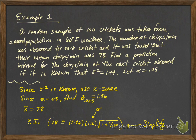In this problem, a random sample of 100 crickets was taken from a normal population in 60 degree Fahrenheit weather. The number of chirps per minute was observed for each cricket and it was found that their mean chirps per minute was 78. Find a prediction interval for the chirps per minute of the next cricket observed if it is known that sigma squared is 1.44, and let's let alpha be 0.05, so a 95 percent confidence for our prediction interval.